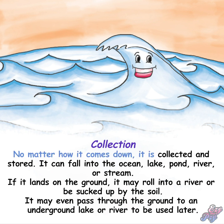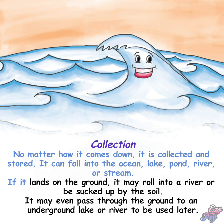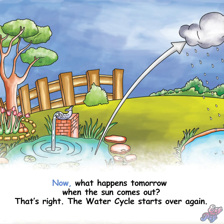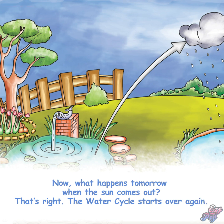It can fall into the ocean, lake, pond, river, or stream. If it lands on the ground it may roll into a river, or be sucked up by the soil. It may even pass through the ground to an underground lake or river to be used later. Now, what happens tomorrow when the sun comes out? That's right — the water cycle starts over again.